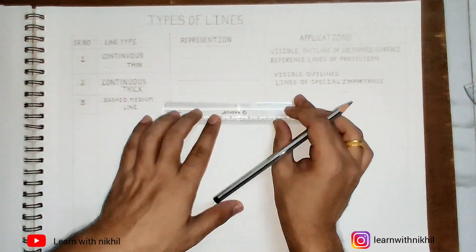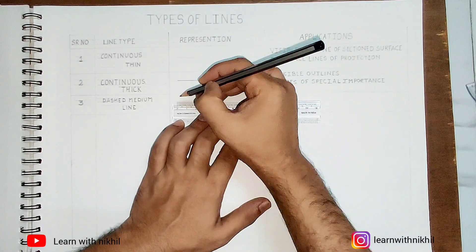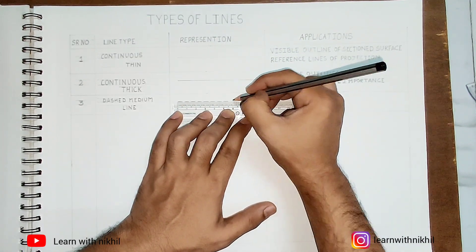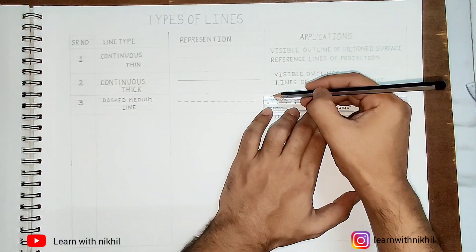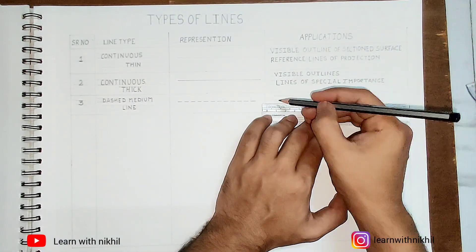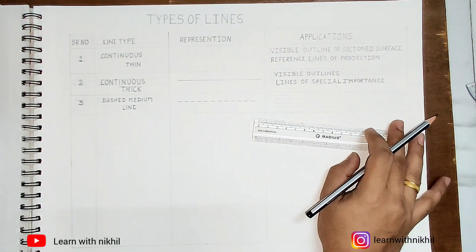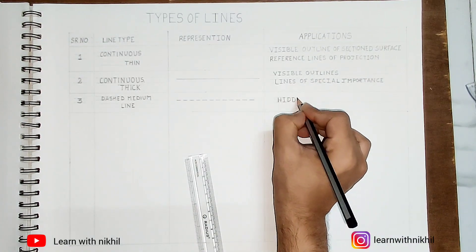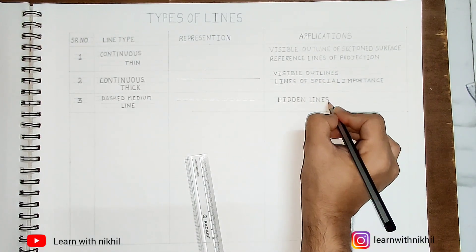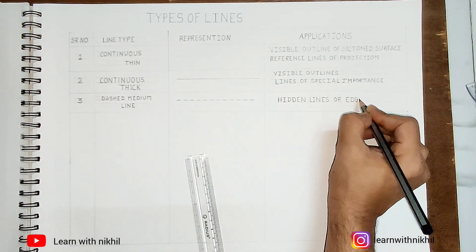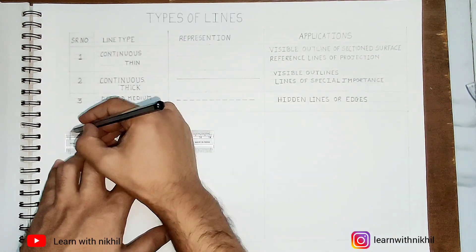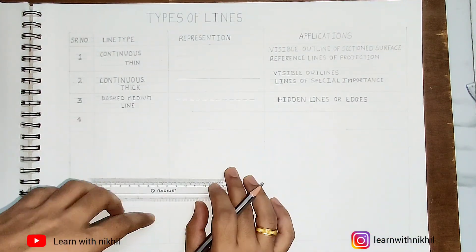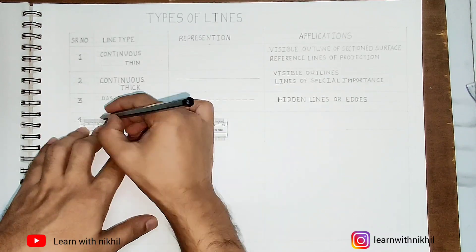The third is the dashed medium line. This is a dashed line but you should keep in mind that the distance matters here. One dash is 4 millimeters with a gap of 2 millimeters, then again a 4 millimeter line with a 2 millimeter gap. Those lines are used as hidden lines or edges.